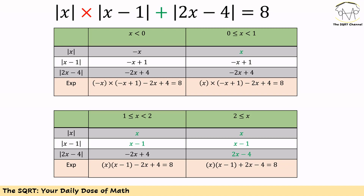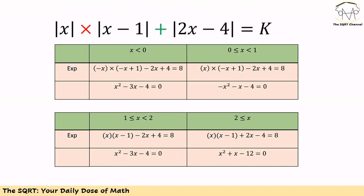Applying the same approach to all four regions gives us four equations — one per region. We simplify each equation, and each one reduces to a quadratic equation that we need to solve.